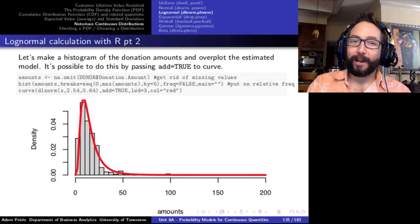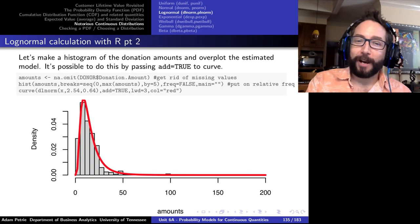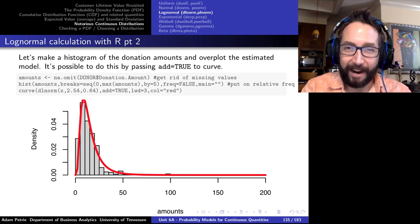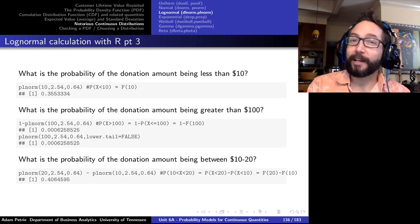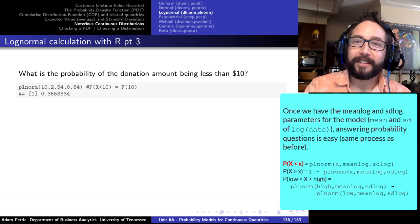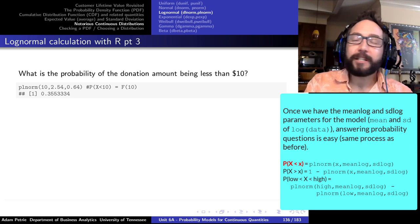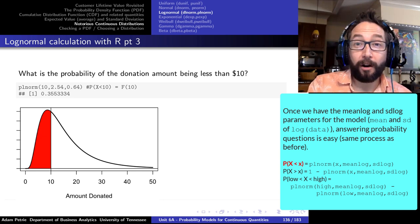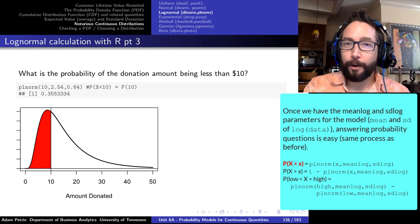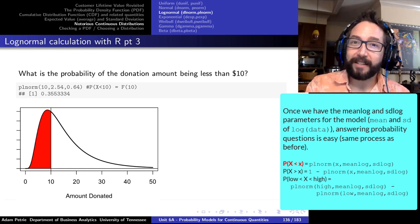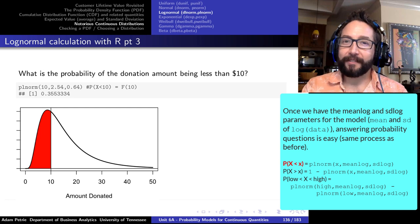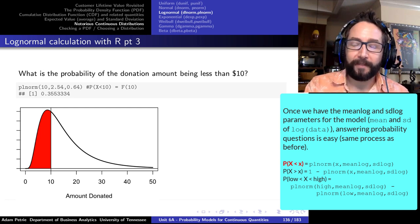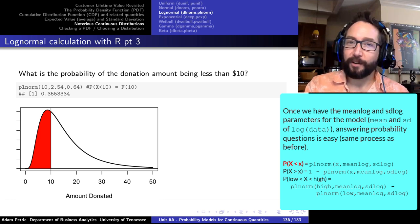Fitting those parameters to the donation data and superimposing the log normal curve on a histogram shows a pretty good fit. To answer probability questions: what's the probability that someone donates less than $10? R knows the log normal by the abbreviation lnorm. plnorm(10, 2.54, 0.64) gives about a 35.5% chance. What about greater than $100? Using the complement rule: 1 minus plnorm(100, 2.54, 0.64) shows this is only about 0.06% of the time.